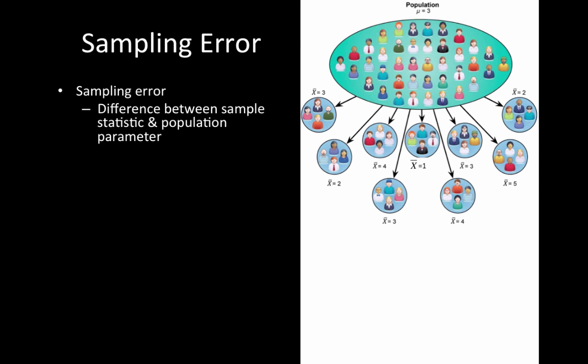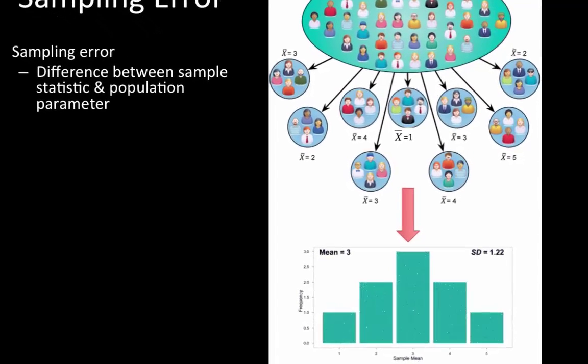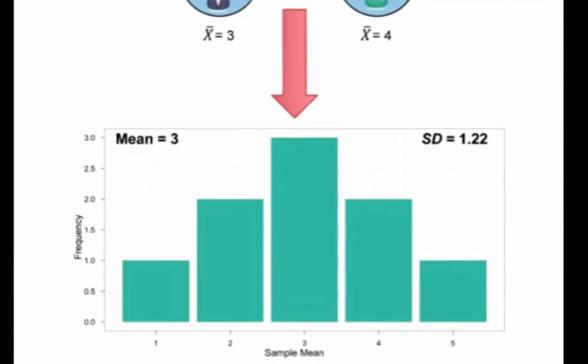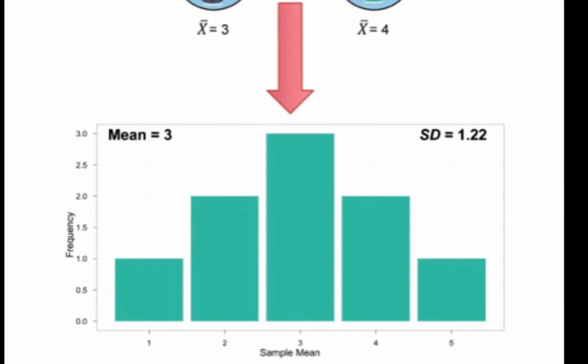If we plot these nine samples on a bar chart, the x-axis is the sample mean (1 through 5, where 1 is 'I hate this professor' and 5 is 'I love this professor'), and the y-axis is frequency. We have 0 to 3 in half-point increments. The mode is a sample mean of 3, which occurred three times.